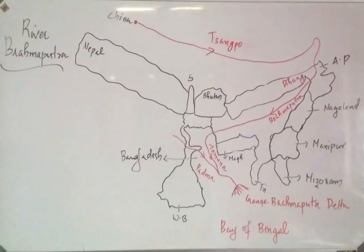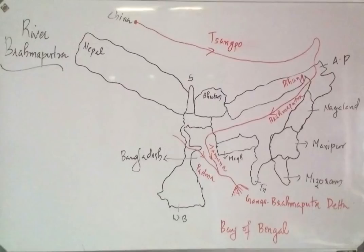Now we will show you the picture of the Brahmaputra. The origin of the Brahmaputra is in China, specifically in Tibet. In Tibet, the name of this river is Sangpo, and it originates from the Chemayungdung Glacier in China.